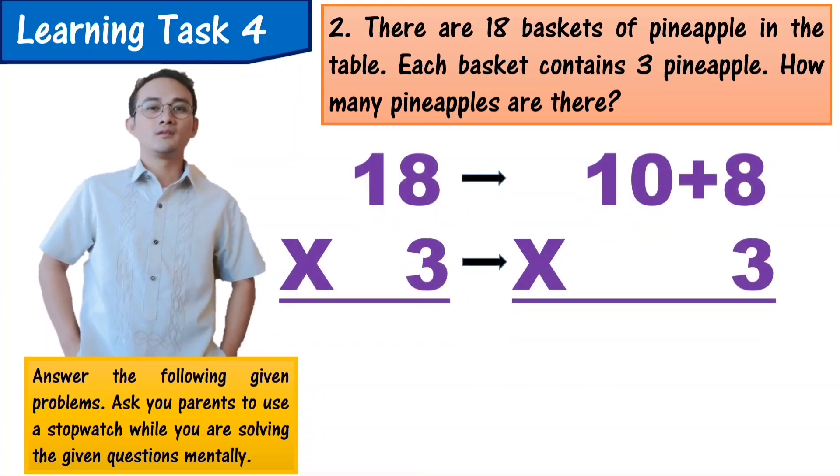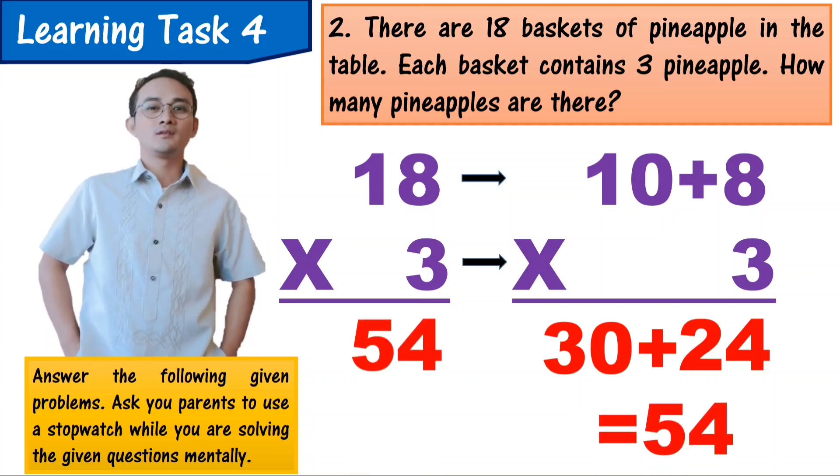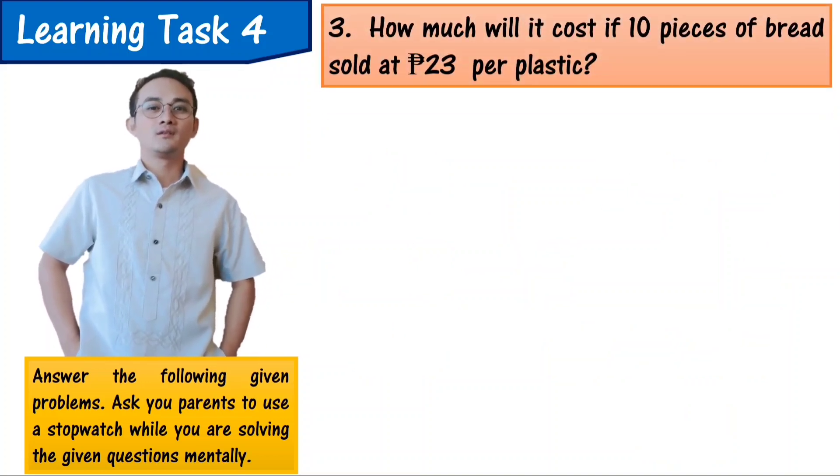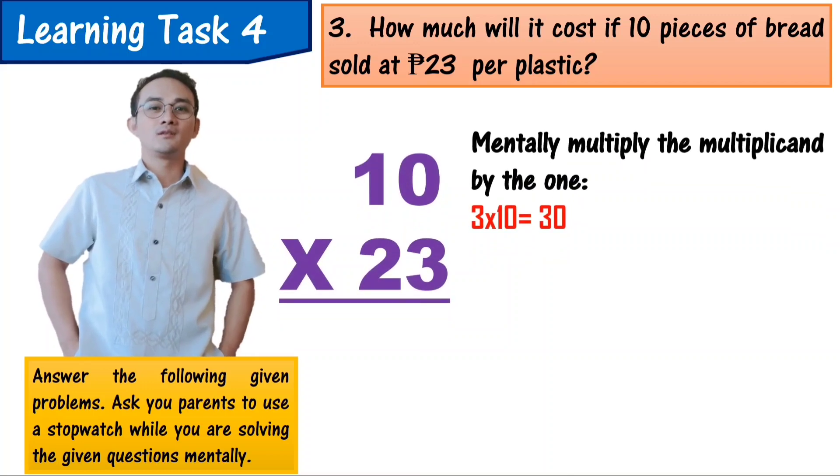18 times 3: The expanded form of 18 is 10 plus 8. 3 times 8 equals 24. 3 times 10 equals 30. 30 plus 24 equals 54. A total of 54 pineapples are there.